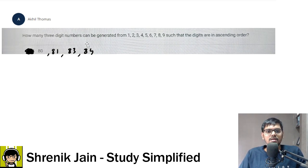The question says how many three digit numbers can be generated from 1, 2, 3, 4, 5, 6, 7, 8, 9 such that the digits are in ascending order. Options are 80, 81, 83, 84.